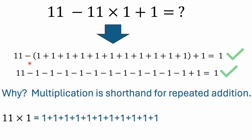I could write this out differently just to prove a point. 11 times 1 would be the same thing as adding 11 ones. Of course, it's also the same as adding 1 eleven times, but I think it makes a little more impact written this way. So if you have this minus 11 times 1, I could write it out as 11 ones being added together, because 11 times 1 is the same as adding 11 ones.